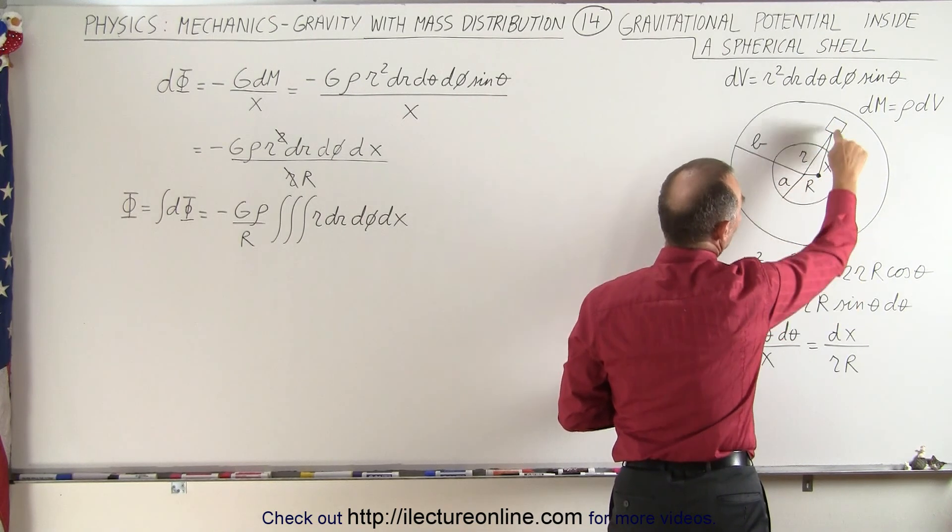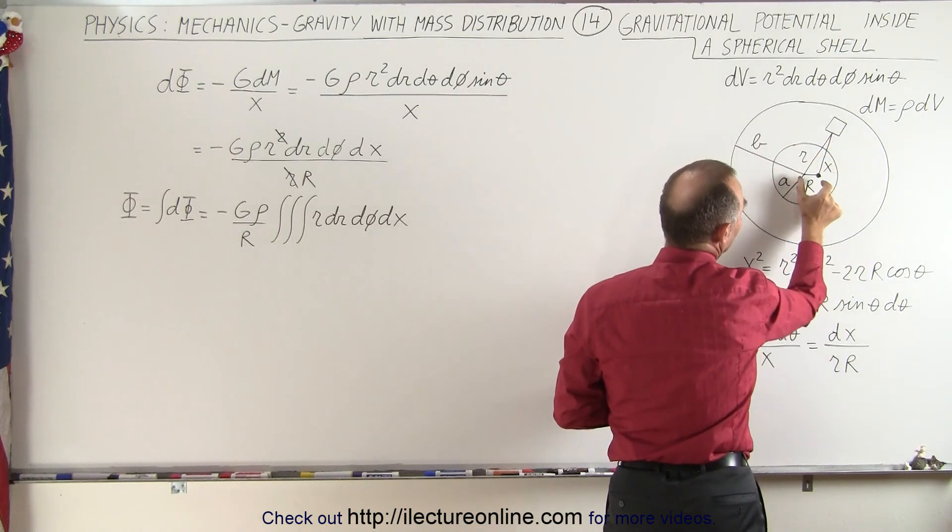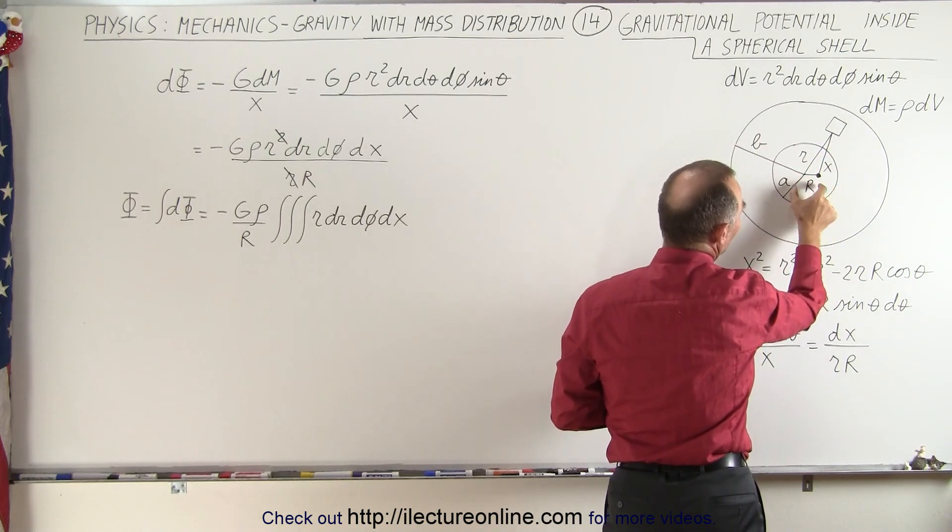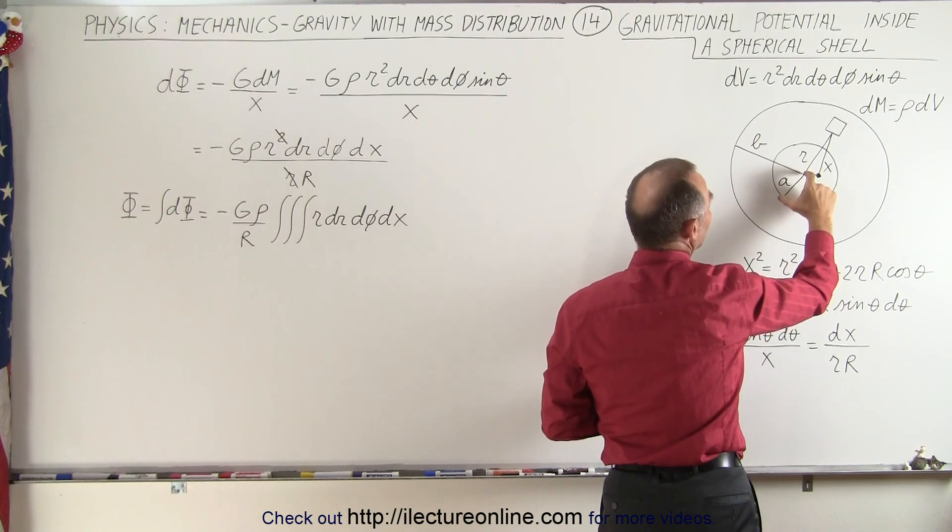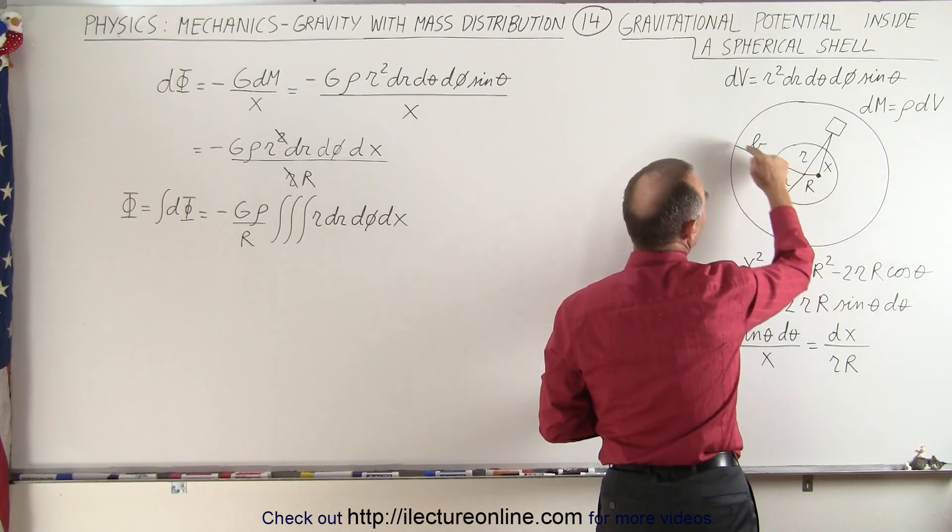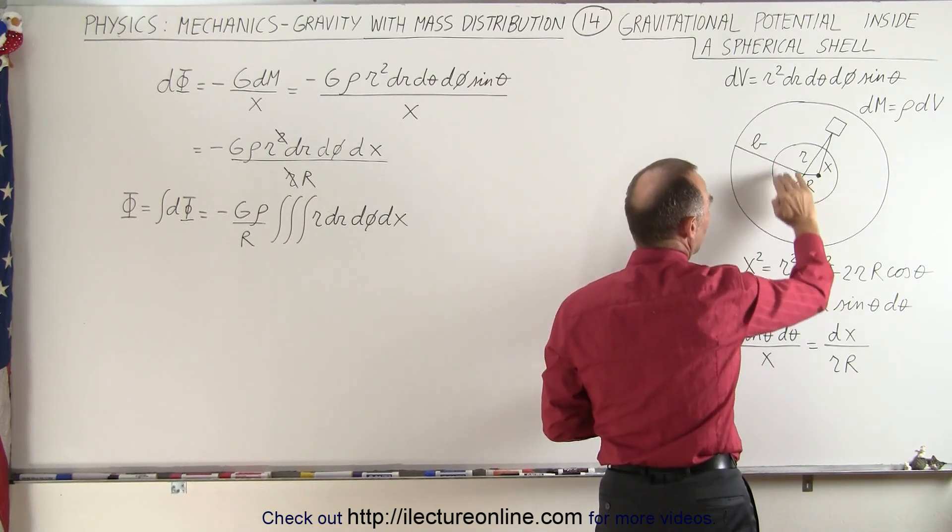The distance from our position to that volume element is x and the distance from our position to the center is capital R. The inside radius of the shell is a, the outside radius is b, and this is the hollow part right here.